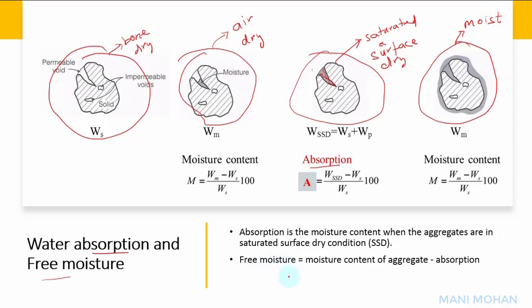In mix design of concrete, it is assumed that aggregates are saturated surface dry. Negative free moisture will cause the aggregate to absorb water, whereas positive free moisture will release water into the concrete mix. These two conditions significantly affect the quality of concrete at site, hence knowledge of water absorption and free moisture is necessary to guide adjustments to water content for a specific concrete mix.